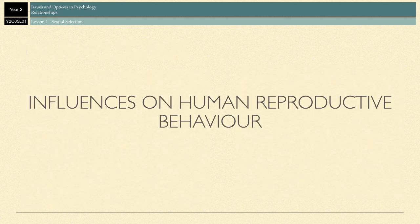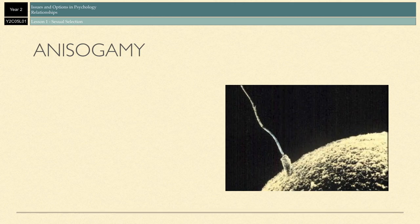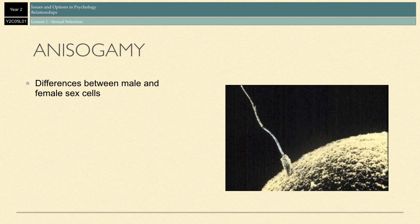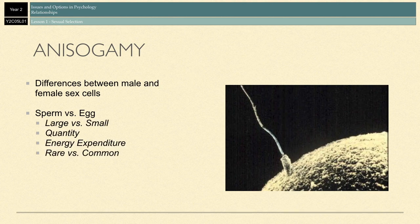Now the question is: what influences human reproductive behaviour? The main one is something called anisogamy. Anisogamy refers to differences between male and female sex cells — your male sex cells, sperm, and your female sex cells, the egg or ova. These differences have an effect on how males and females go about finding a partner to reproduce with. If we just break it down in terms of sperm versus egg, these are the things that we think about.